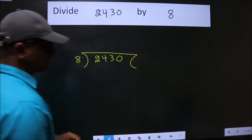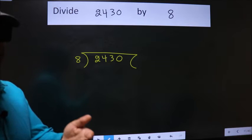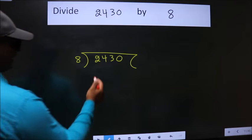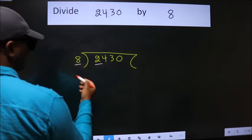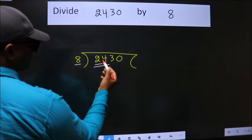This is your step 1. Next, here we have 2. Here 8. 2 is smaller than 8, so we should take two numbers: 24.